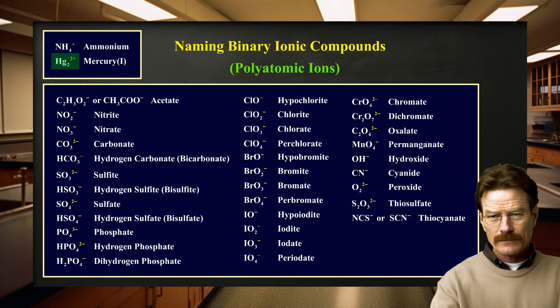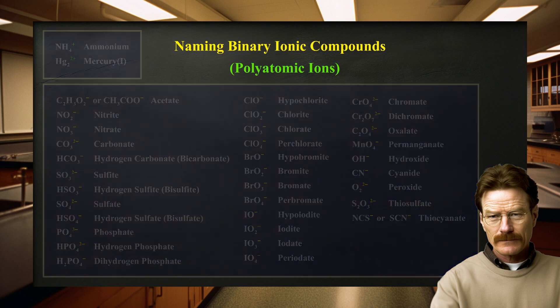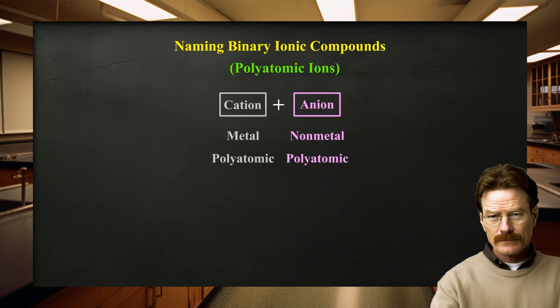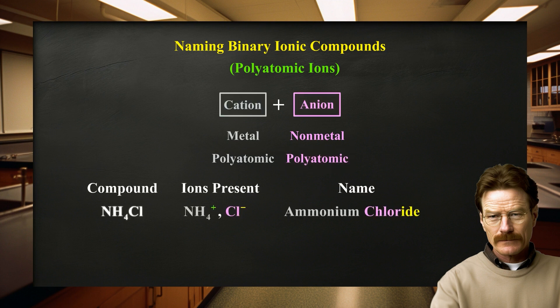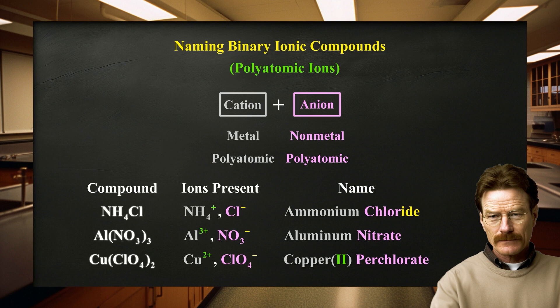The Hg2 2+ ion is unusual because, even though it is a metal ion, it is not monoatomic — it is technically a polyatomic ion. We can now update our rules for naming ionic compounds that contain polyatomic ions by first naming the cation, followed by the anion. A cation will usually be a metallic monoatomic ion or at times a polyatomic ion. An anion will usually be a nonmetal monoatomic ion or a polyatomic ion. For example, the following ionic compounds would be named ammonium chloride, aluminum nitrate, and copper(2) perchlorate. When multiples of a polyatomic ion are present, the formula for the polyatomic ion is enclosed in parentheses.